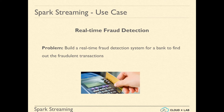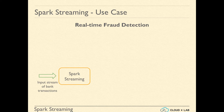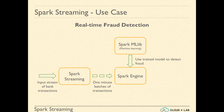Let us discuss one more use case of Spark Streaming: how do we build a real-time fraud detection system for a bank to find out fraudulent transactions? If you can build such a system, banks can take appropriate actions as soon as a transaction gets marked as fraudulent. To build such a system, we use machine learning to train a fraud detection model — for example, we can use Spark ML Lib. Spark Streaming receives streams of bank transactions as input, creates one-minute batches, and then the Spark Engine processes each batch and identifies fraudulent transactions using the already trained fraud detection model.